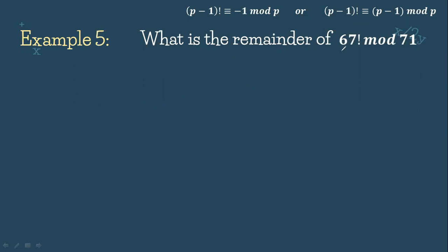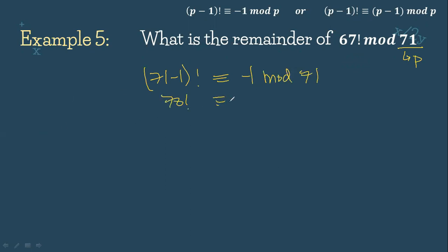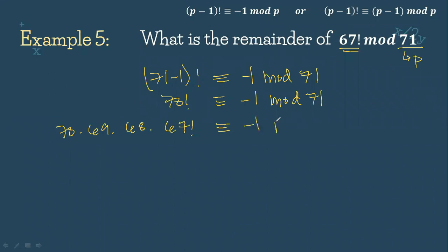What is the remainder of 67 factorial mod 71? So 71 is our P. We have (71 minus 1) factorial congruent to negative 1 mod 71, which gives 70 factorial congruent to negative 1 mod 71. Expanding down to 67: 70 times 69 times 68 times 67 factorial is congruent to negative 1 mod 71.